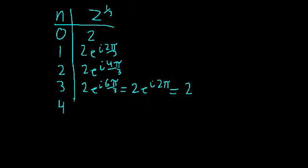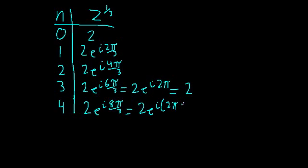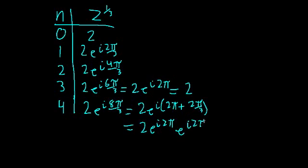Let's keep going for one more. When n equals 4, we get 2 e to the i 8 pi over 3, which simplifies to 2 e to the i times (2 pi plus 2 pi over 3). Distributing, this is 2 e to the i 2 pi times e to the i 2 pi over 3. Since e to the i 2 pi equals 1, we get back 2 e to the i 2 pi over 3 — the same as n equals 1. So for more and more values of n, we just keep repeating these three values.